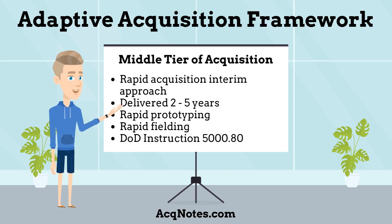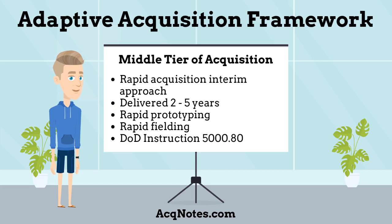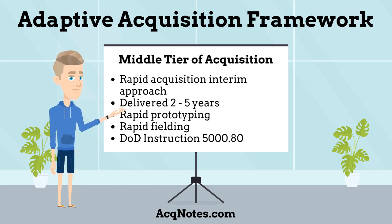The second Adaptive Acquisition pathway is Middle Tier Acquisition. Middle Tier Acquisition is a rapid acquisition interim approach that focuses on delivering capability in a period of two to five years with rapid prototypes and rapid fielding with proven technology. The main guidance is DOD Instruction 5000.80, Operation of Middle Tier Acquisition.